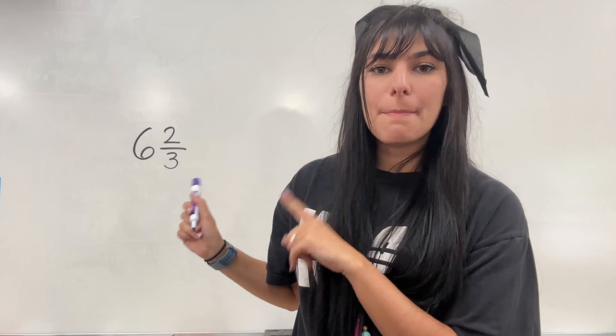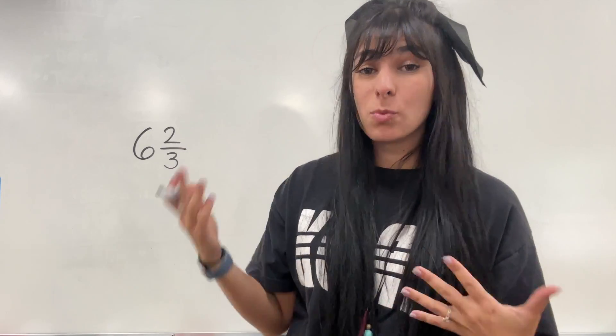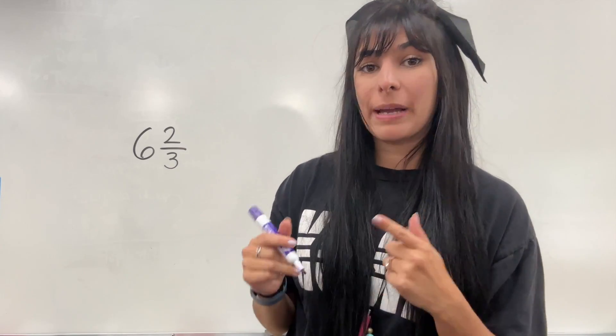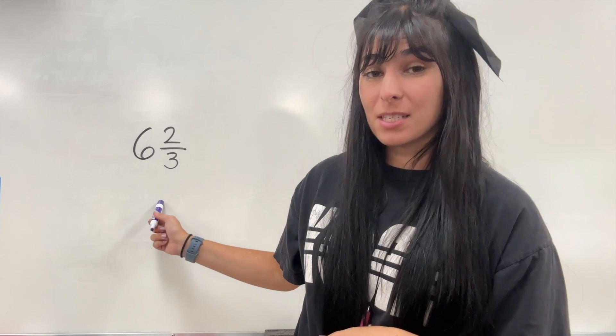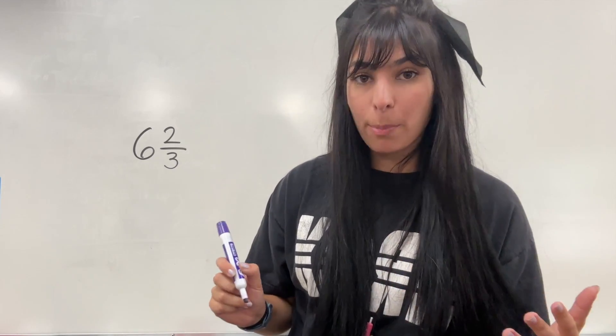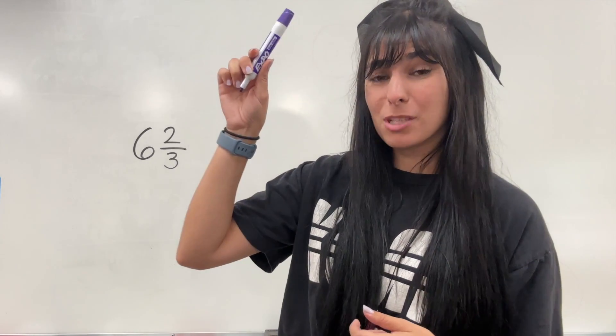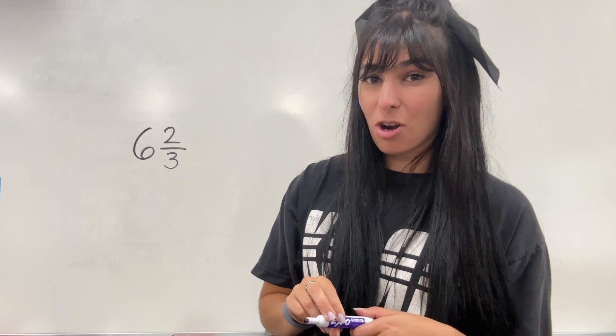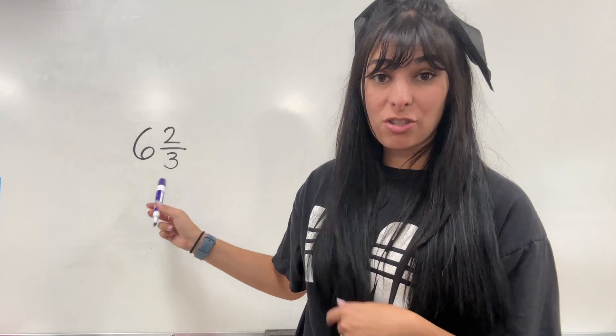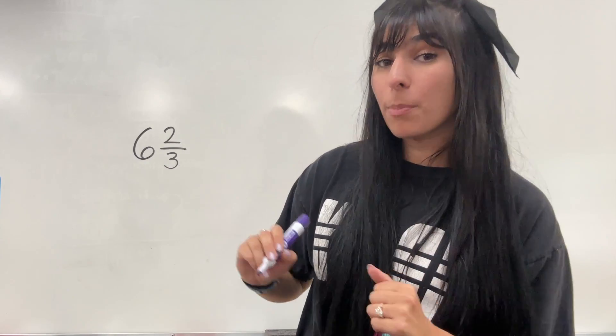So first things first, this is a mixed number. It has a whole number mixed with a fraction. So in order to multiply or divide with a number that looks like this, a mixed number, we have to turn it into an improper fraction. Improper means that big number is going to be on top and the small number is going to be the denominator. So let's go ahead and change this mixed number into an improper fraction.